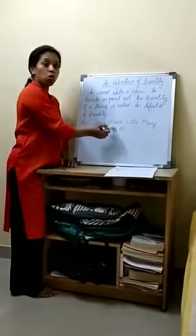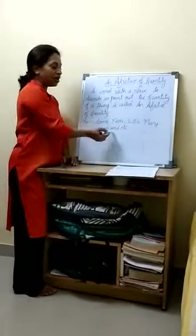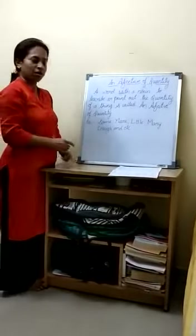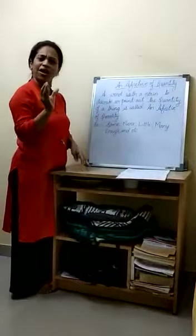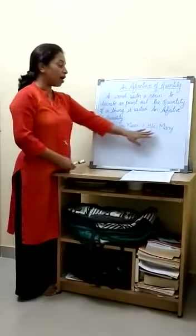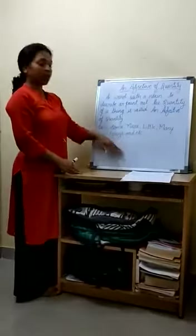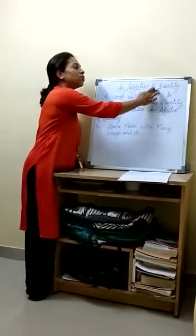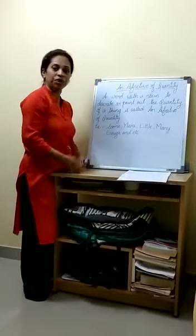For example: some, more, little, many, enough, and so on. Some means very little. I have more. I have very little chocolate. I have many chocolates. I have enough money. My father has enough money. So these are the examples of adjective of quantity. Quantity means it tells how much of the things we have with us.